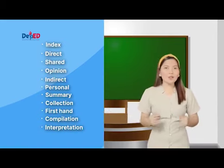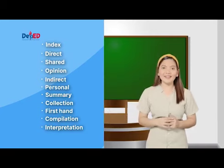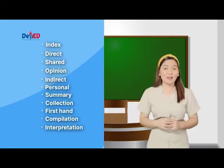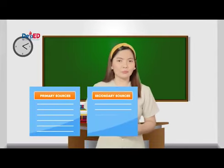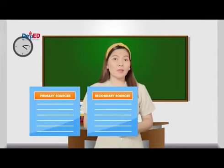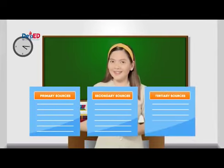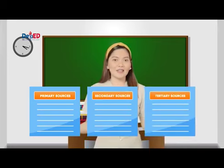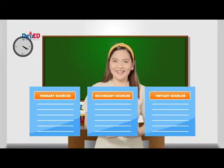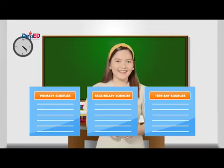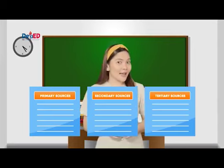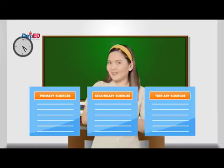All these words are descriptions of primary, secondary, and tertiary sources. Now, I want you to arrange them according to the type where they belong. Identify whether they describe primary, secondary, or tertiary source. Write your answers in a piece of paper. You have 30 seconds to accomplish this activity.